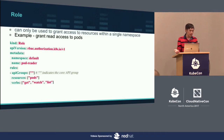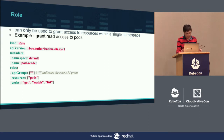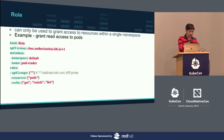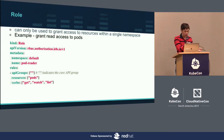Now for the Role object—the difference is that a Role requires you to specify a namespace as well. In this example, I'm using the default namespace. Looking at the rules, it's very similar—I don't specify particular API groups—but the resource is inside the namespace. Inside the default namespace, you can do get, watch, and list on the pods. That's why this is called the 'pod-reader' role.